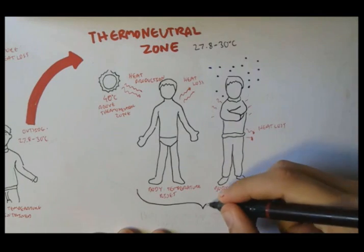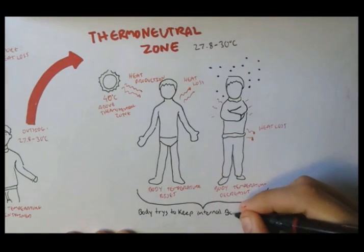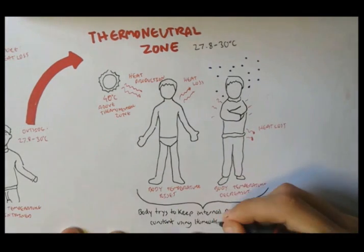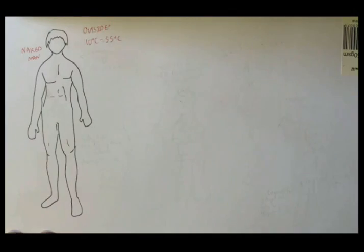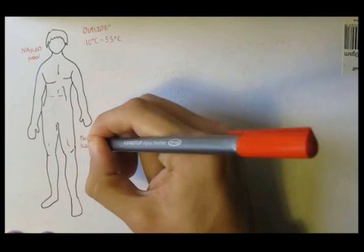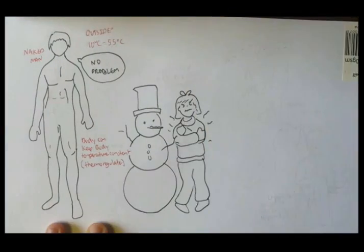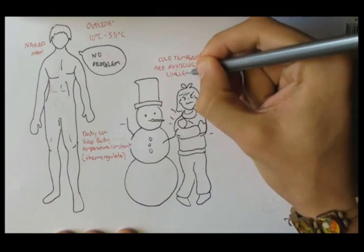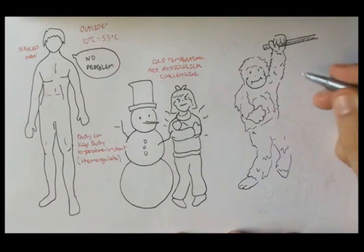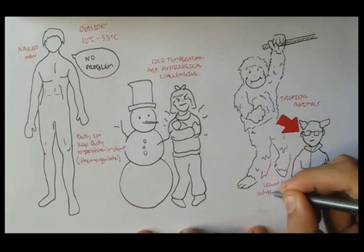Even in both these situations, the body tries to keep internal body temperature constant by using homeostatic mechanisms. Because of these homeostatic mechanisms, a person can keep their internal body temperature relatively stable for some time, even if the outside is between 10 to 55 degrees Celsius. The process by which the body tries to keep internal body temperature balanced is called thermoregulation. Very cold weather is actually psychologically challenging for humans, making it more difficult to adapt to cold environments. Humans are naturally tropical mammals, but through evolution, we have been able to adapt to challenging temperatures.